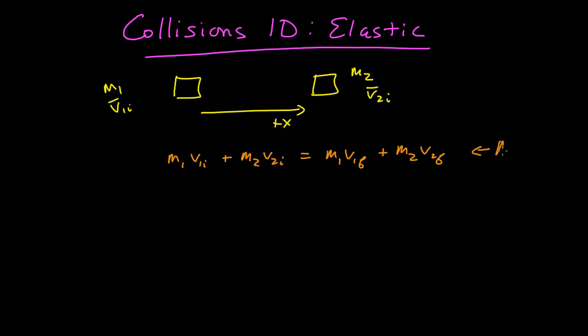We also have energy conservation. Energy conservation says that m1*v1i² + m2*v2i² is equal to m1*v1f² + m2*v2f². So this is energy.